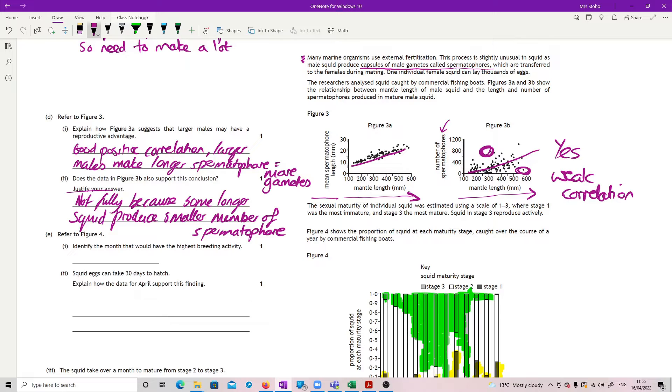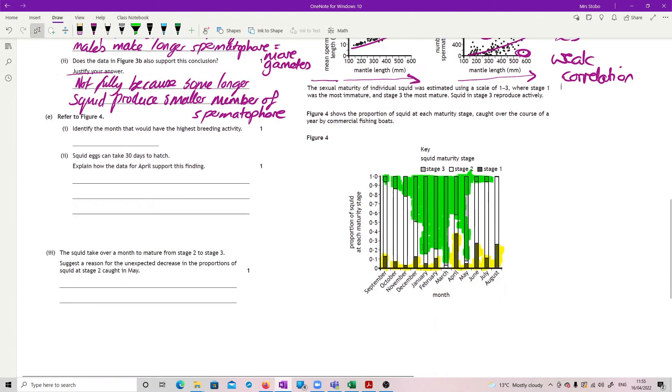Identify the month which would have the highest breeding activity. This is from figure four. So figure four said that squid in stage three are reproducing actively. So the month that we'd have the highest breeding activity, given I'd coloured in all of this stage three in green, definitely March.